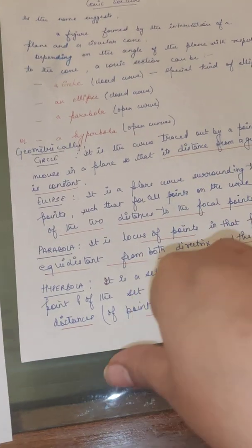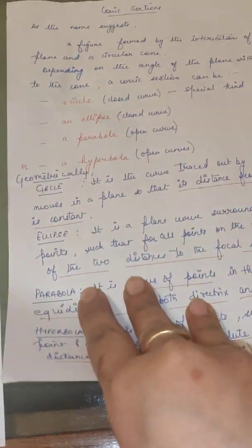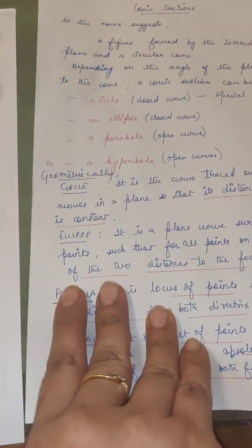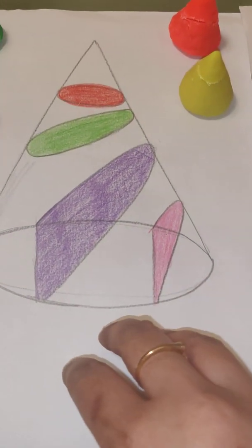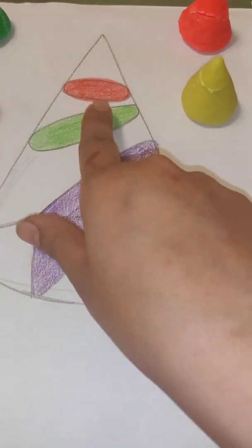All this is a geometrical definition. This we will see in the next video. Today, we are going to do it practically first. How practically are you going to get these four figures? Let's see. I have made a sketched figure for you with all the angles. Four angles I have taken.